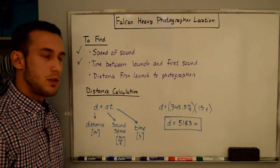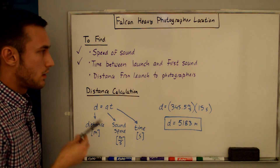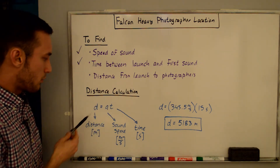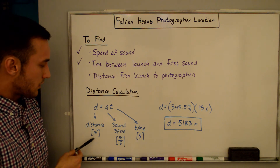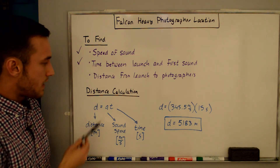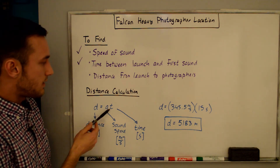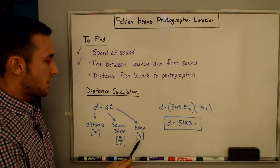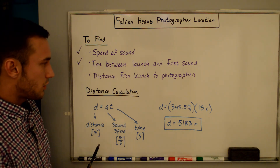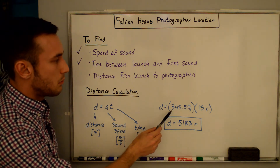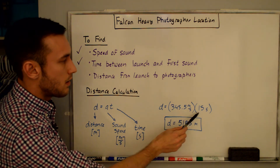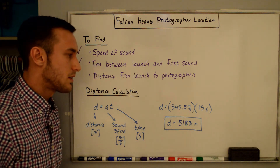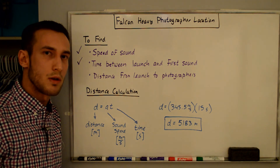The last step in our calculations is to compute the actual distance between the launch and the photographer. We're going to use the equation D = A × T, where D is the distance in meters, A is the speed of sound in meters per second, and T is the time from when we see it to when we hear it in seconds. The units check out. Plugging in the speed of sound and that time, the final solution is that the distance is 5,183 meters.